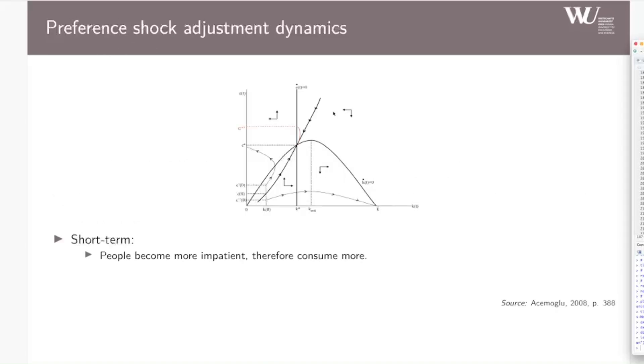First, to the short run: when people become more impatient, they consume more initially. Consumption jumps upwards. Savings for the longer term decrease and capital accumulation slows slightly down. Utility is therefore higher in the short run, but at the cost of future consumption and output.